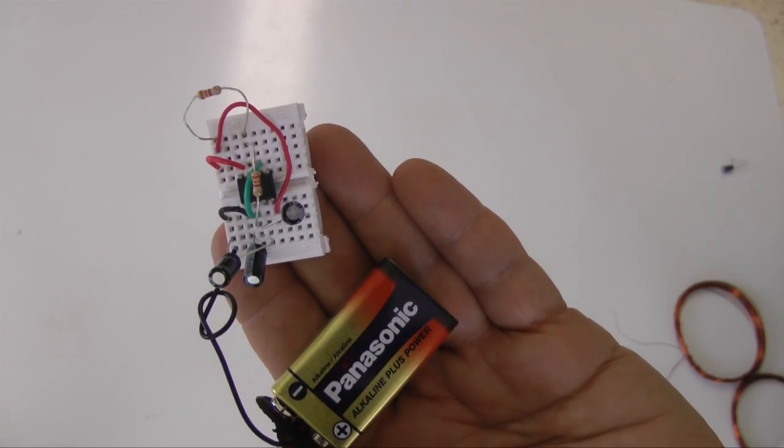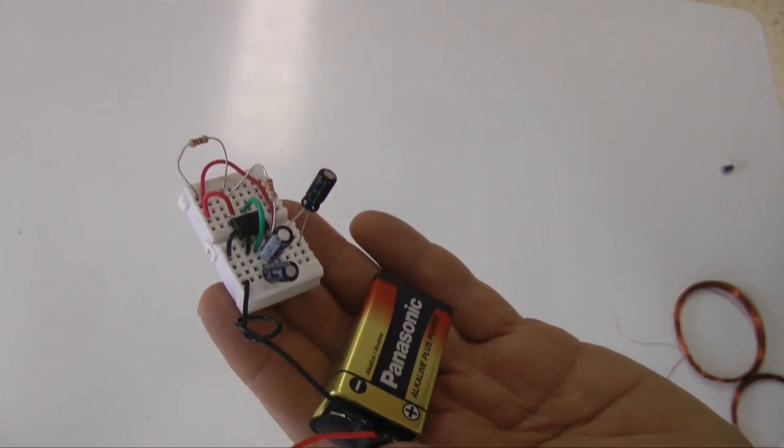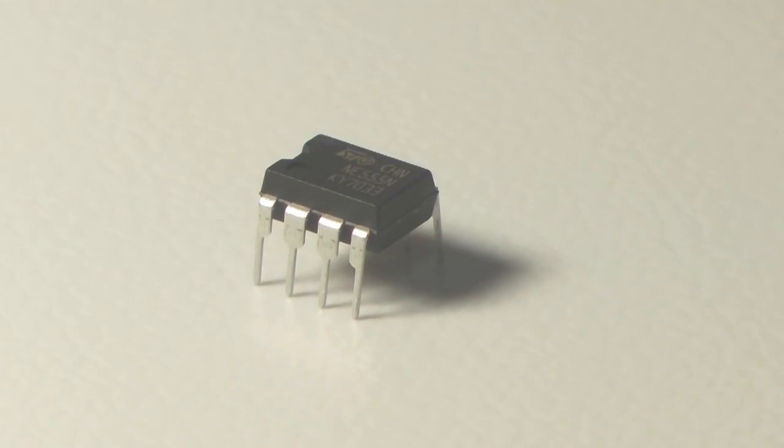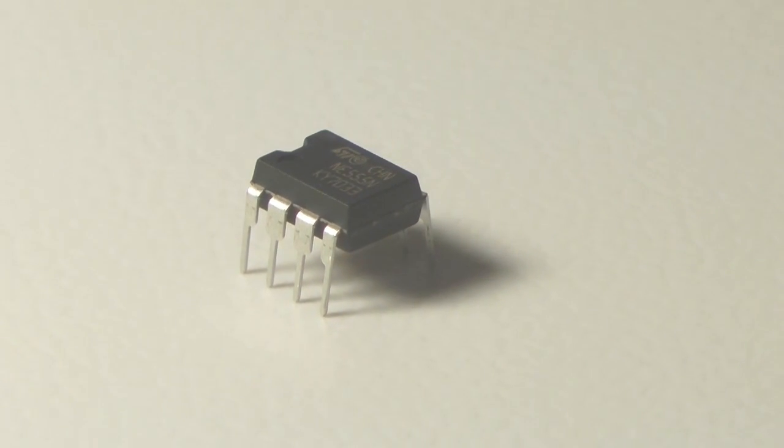Next, I created a circuit to produce a tone. This is the equivalent of Bell's interrupter. This tone generator is constructed from a common 555 integrated circuit.